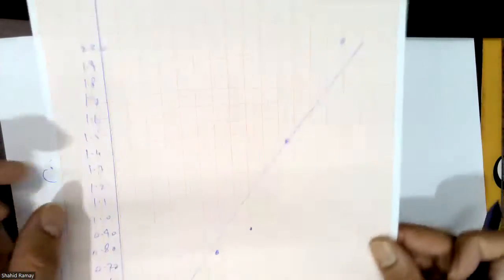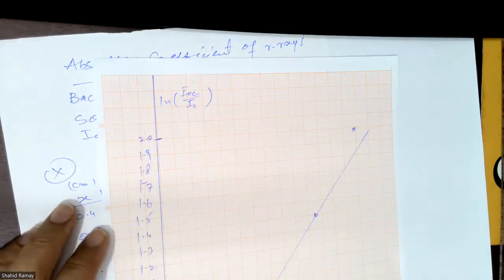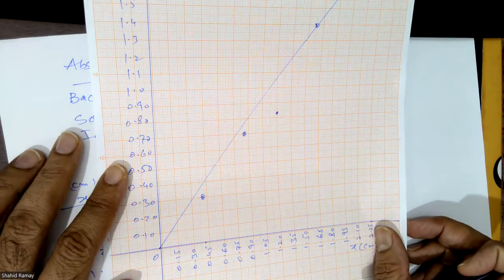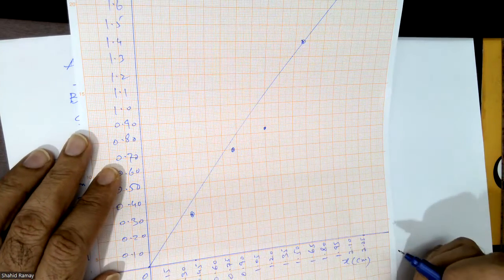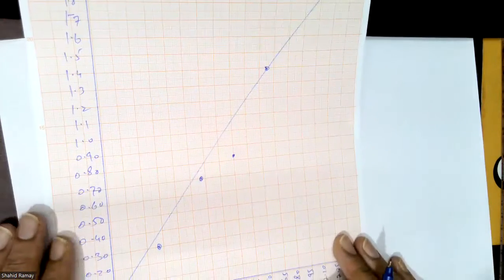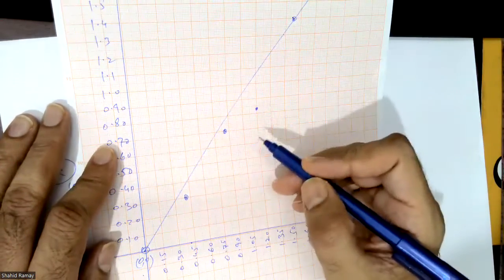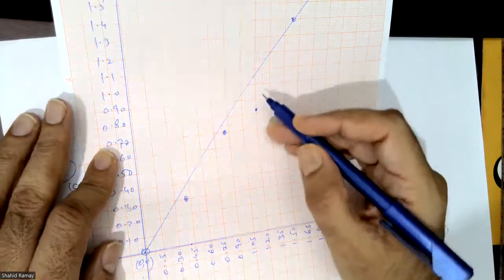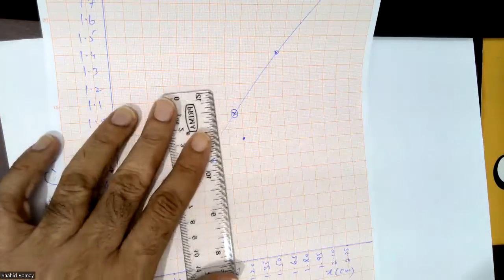I draw the line like this. Now you will take two points on the line — choose points that you can read easily. One point is zero zero, which we already know. The second point should be at least half the length of the line away from the first point, so you can take a point that is easy to measure.